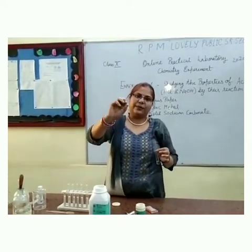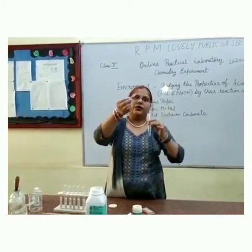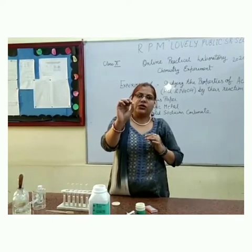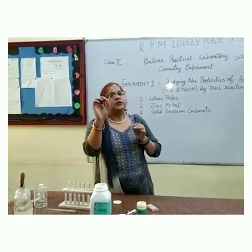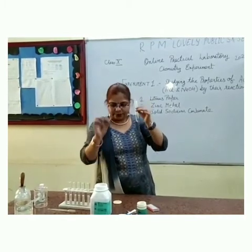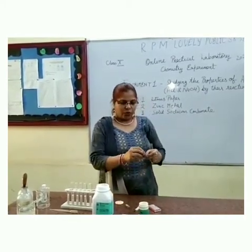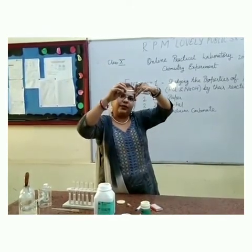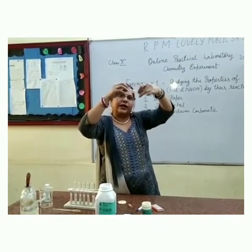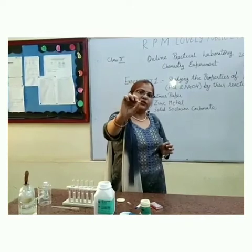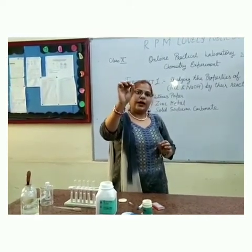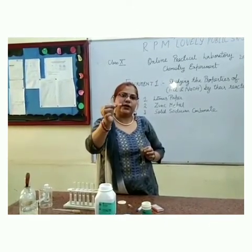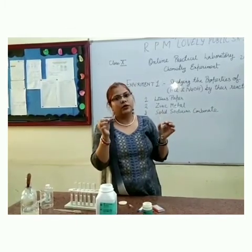When we take red litmus in this acid, you can see that there is no change — no change of colour. This shows that red litmus does not react with the acid. Now, we will put a small strip of blue litmus in the same HCl, and we can see that the colour of the blue litmus changes to red. That means acids turn blue litmus red when it comes in contact with acid.